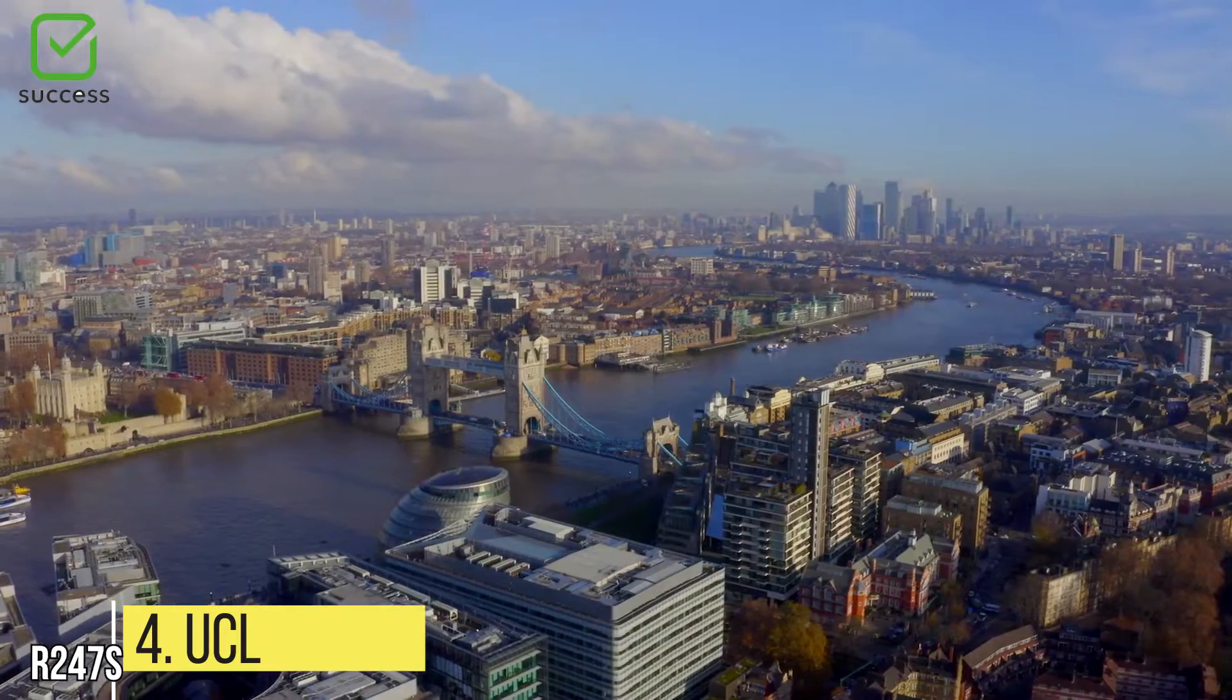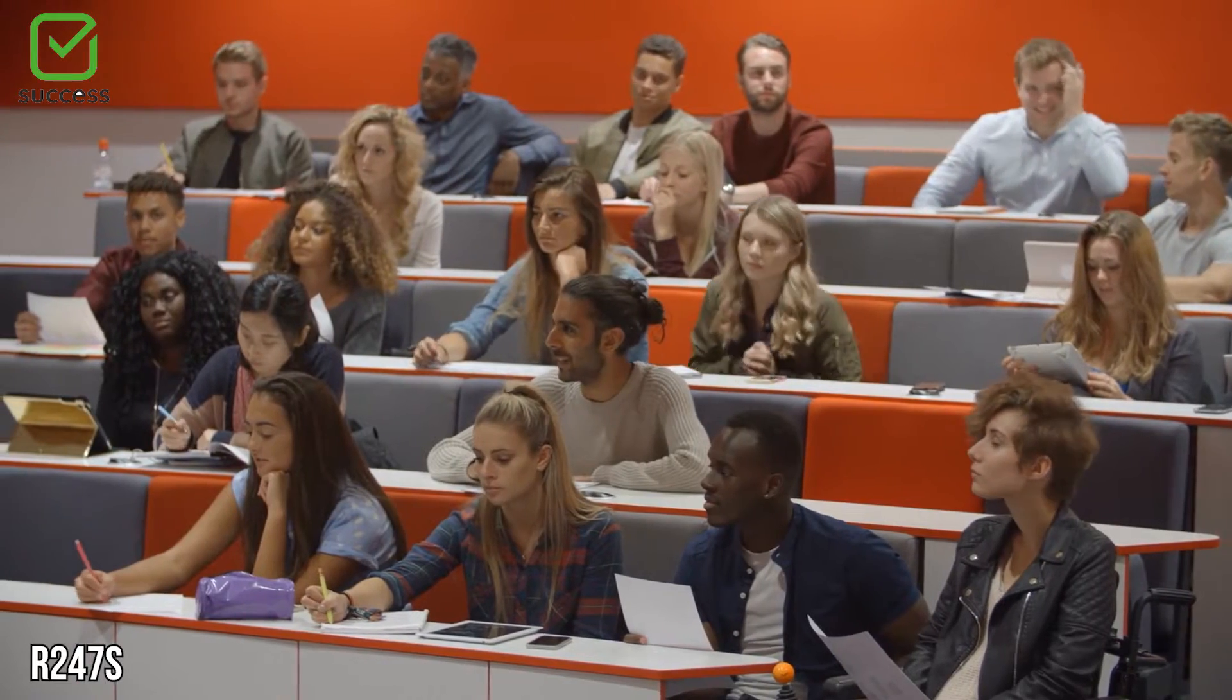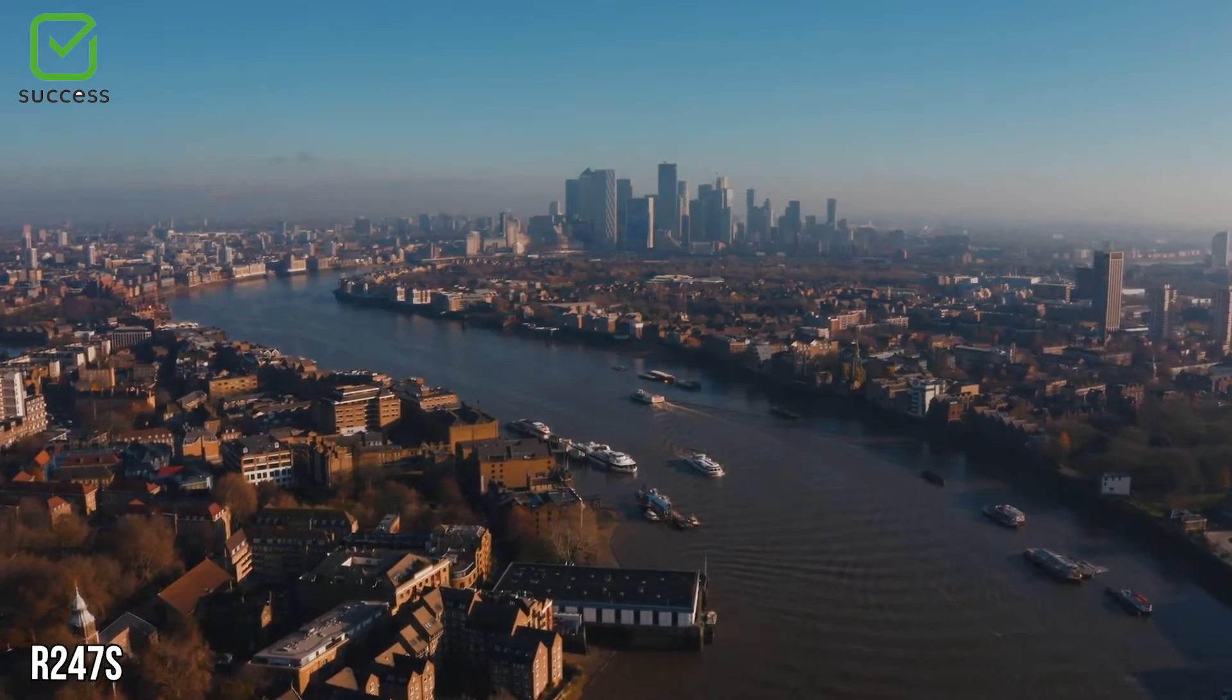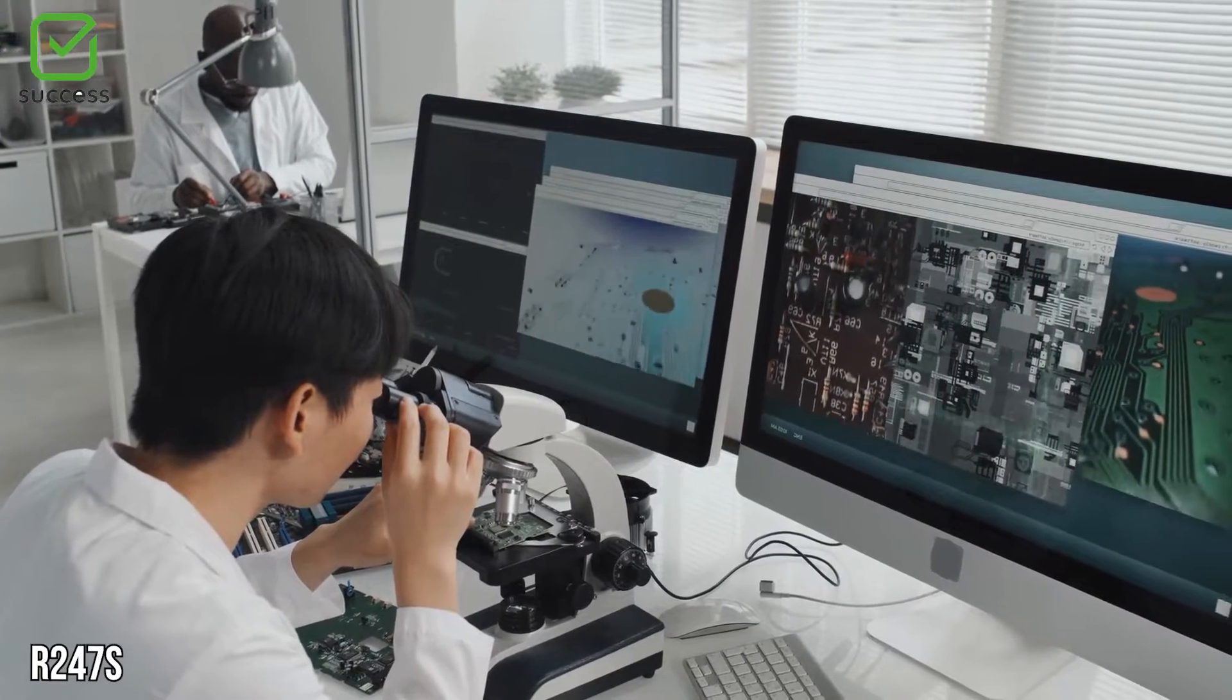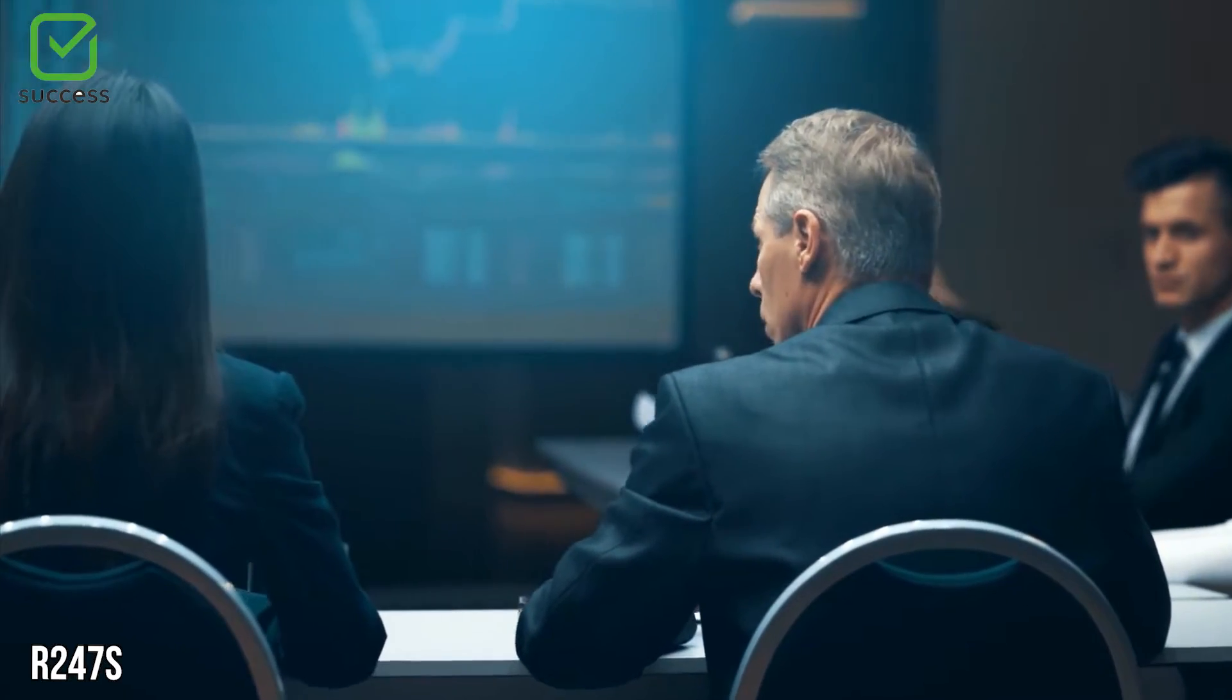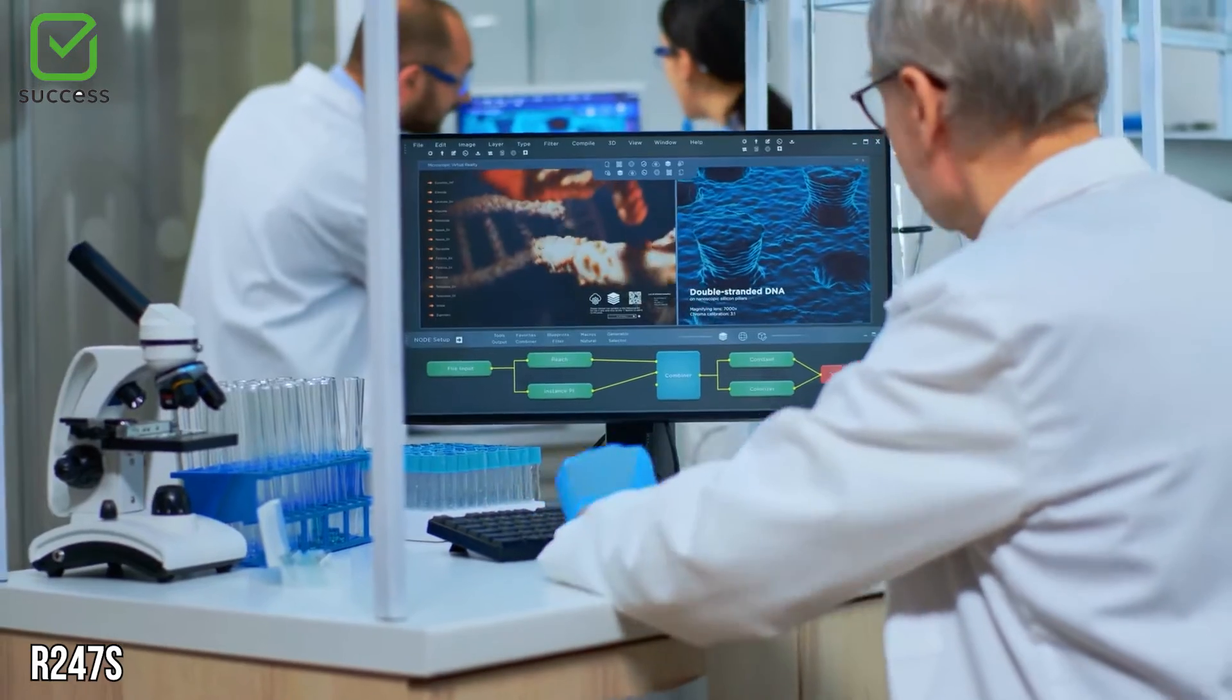University College London. In the heart of London, the University College London is a constituent college of the City University of London and a member of the distinguished Russell Group. It is also a global leader in experimental computer science research. As a result of UCL's close ties to the city's top finance and technology companies, its degree programs cover the application of computer systems in commerce, industry, government, and science.